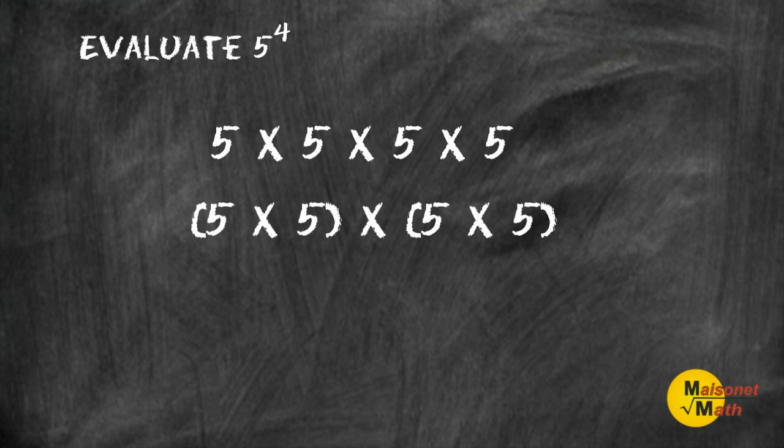Next, using parentheses, group two numbers at a time. So we are going to multiply 5 × 5, which is 25, and 5 × 5 over on this side, which is also 25.